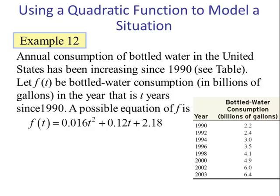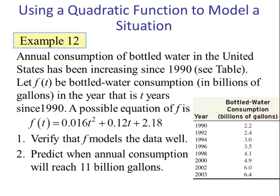Let f(t) be the bottled water consumption in billions of gallons, where t is the number of years since 1990. A possible equation is f(t) = 0.016t² + 0.12t + 2.18. Number 1: Verify that f models the data well. Number 2: Predict when the annual consumption will reach 11 billion gallons.